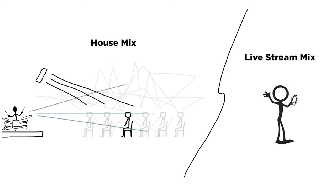I know there are some people who use an aux mix or a matrix output for their live stream, and I think that's at least a step in the right direction over sending just a straight board feed from your house mix. But I think there are two reasons why an aux or matrix mix will never sound as good as a completely separate mix. One is that channel EQ is often used to compensate for room issues like feedback or resonance, which sounds okay in the room, but when that EQ setting is used for your live stream, it's probably not ideal. The second reason is that creating one mix is hard enough — trying to create two mixes with one operator pretty much means that one of them is going to be left on autopilot.